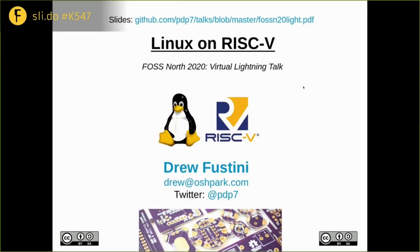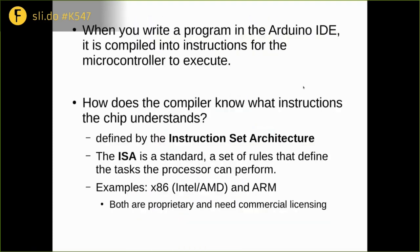My name is Drew Fostini and I wanted to talk about Linux on RISC-V, which are a few things I'm quite excited about. When you write a program in the Arduino IDE or whatever IDE you might be using, if it's a language like C, it gets compiled into instructions that run on the microcontroller or processor. But how does the compiler know what instructions your chip understands? This is defined by the instruction set architecture, or ISA — a set of rules that defines what tasks the processor can perform.